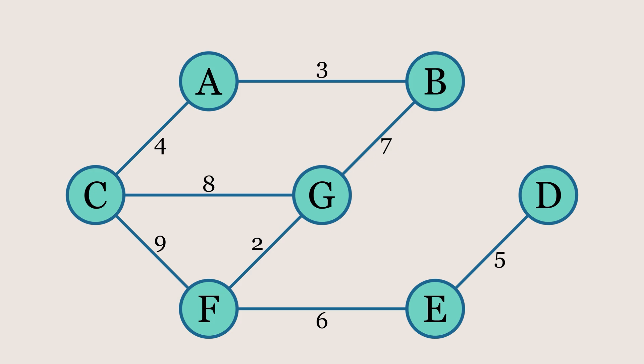In this example, the weight of the edge between node A and node B is 3, meaning it will take 3 units of cost or effort to move from A to B.